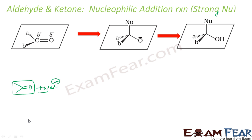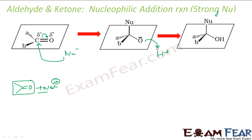So if this nucleophile is strong with a negative charge, it's a strong nucleophile. This carbon has a slightly positive charge because oxygen is more electronegative than carbon - oxygen will get slightly negative charge and carbon is slightly positive. Since carbon is slightly positive, this nucleophile with a negative charge will attack this carbon, and this bond will break so that oxygen gets a negative charge and the nucleophile is attached here.